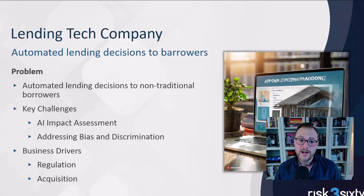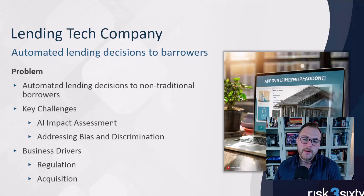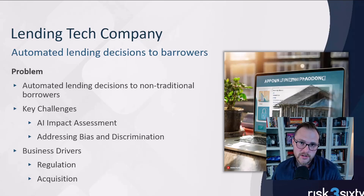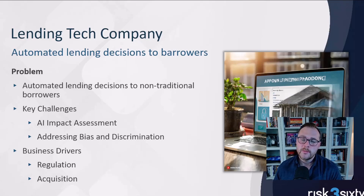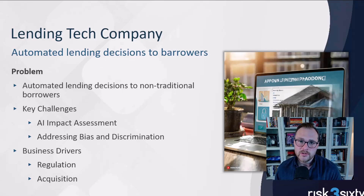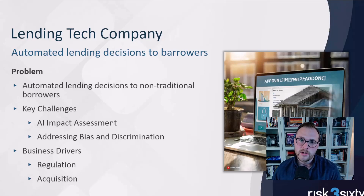The problem they found was that there was bias built into their lending algorithm — the AI they were using. They were unintentionally discriminating against certain groups based on factors hidden in the data, impacting who was getting a loan and who was not.